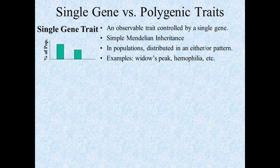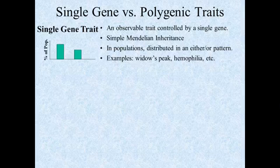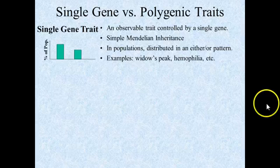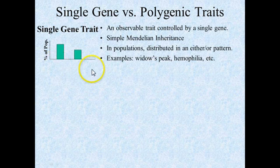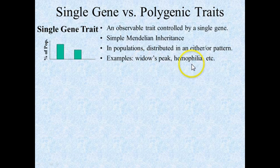Some examples in human terms include things like widow's peak and hemophilia. We can look at a particular allele in the population and see how it varies. The y-axis would be the percent of population, and the x-axis would be the particular allele we're talking about — whether it's widow's peak, hemophilia, or whatever particular gene we're looking at.